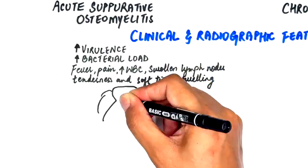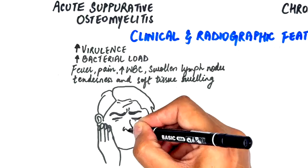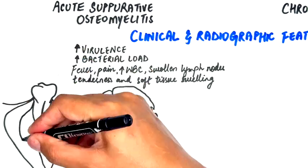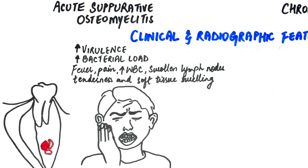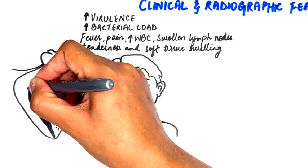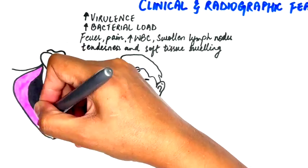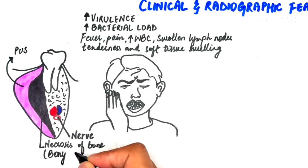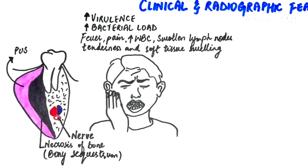Considerable tenderness and soft tissue swelling in the affected area are also noted. Paresthesia in the lower lip and drainage may be noted if pus has accumulated tremendously, leading to compression of the inferior alveolar nerve. Moreover, the necrotic bone may detach from the surrounding healthy bone, a condition referred to as bony sequestrum, which is the dead and exfoliated segment of the bone.